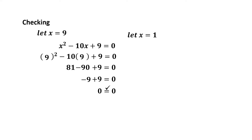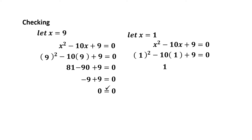Let x = 1. Using the original equation x² - 10x + 9 = 0, substitute x = 1: 1² - 10(1) + 9 = 0; 1 - 10 + 9 = 0; -9 + 9 = 0; 0 = 0. Therefore, 1 is a solution of x² - 10x + 9 = 0.